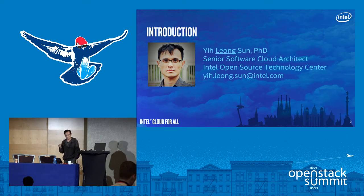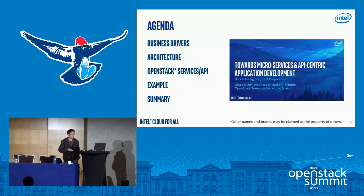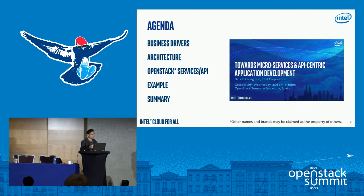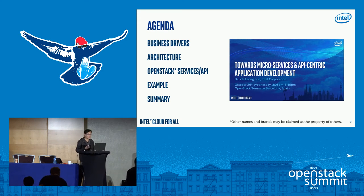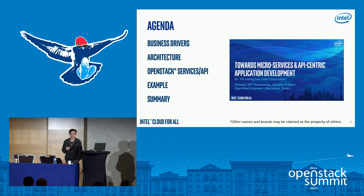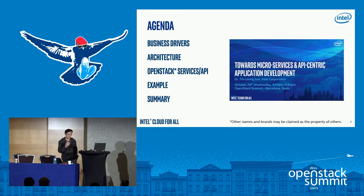This coming Friday we're having another book screening. I'm going to develop the third e-book focusing on application development for OpenStack. Today's agenda: I'll talk about what is a business driver for moving into microservices and API-centric design. I'll briefly discuss architectures, talk about what OpenStack services and API can be useful for microservices application deployment, and use an example to illustrate the differences between different architecture styles.